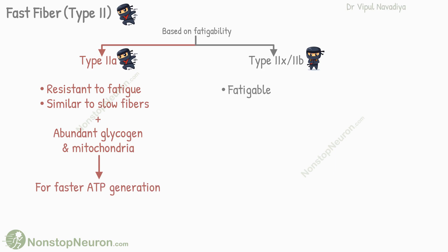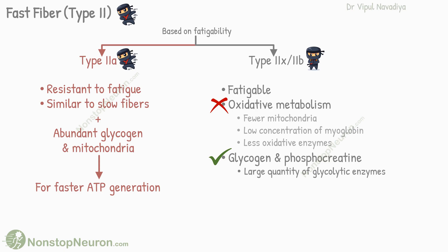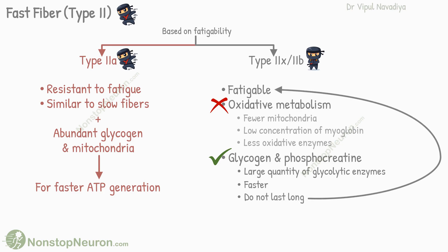Type 2B fibers are easily fatigable. They do not have well-developed machinery for oxidative metabolism — meaning fewer mitochondria, lower concentration of myoglobin, and fewer oxidative enzymes. Rather, they rely mainly on glycogen and phosphocreatine for energy. To use glycogen, they have a greater quantity of glycolytic enzymes. As seen in the video on energetics of muscle contraction, glycolysis of glycogen generates ATPs at a faster rate than oxidative metabolism, making glycolysis more suitable for fast fibers. However, these sources do not last longer than a minute, so these fibers are easily fatigable. A lack of myoglobin gives these fibers a white appearance.